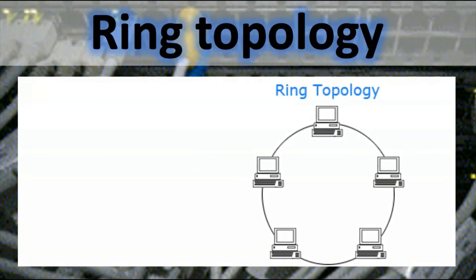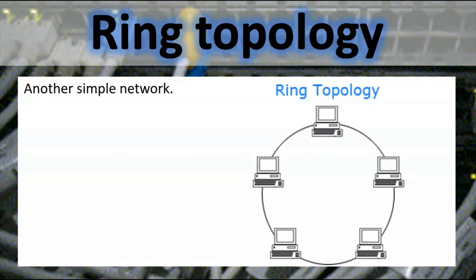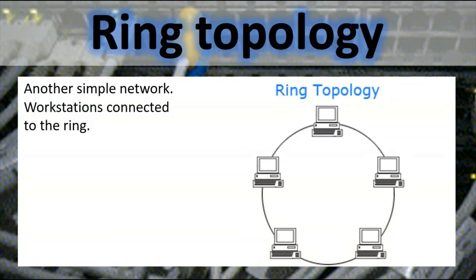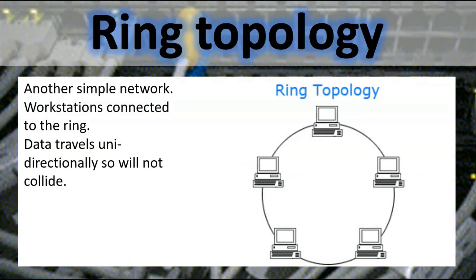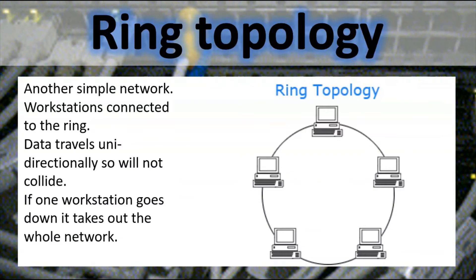Ring topology is another simple network where workstations are connected to the ring. Data travels uni-directionally, so it will not collide. However, if one workstation goes down, it takes out the whole network.